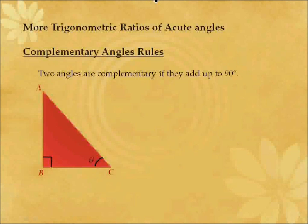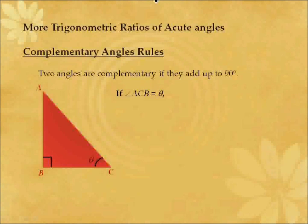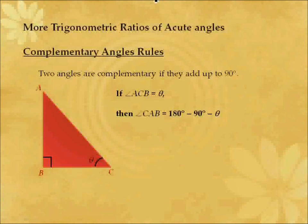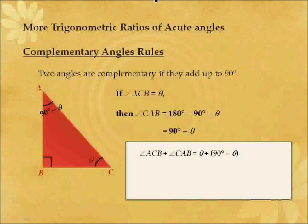Let's move on to complementary angles rules. Two angles are complementary if they add up to 90 degrees. So if we let angle ACB equal to theta, then angle CAB is equal to 180 degrees minus 90 degrees minus theta, due to the sum of angles in a triangle. This simplifies to 90 degrees minus theta. So angle ACB plus angle CAB equals theta plus 90 degrees minus theta, which is 90 degrees, and therefore angle ACB and angle CAB are complementary angles.